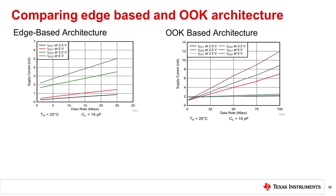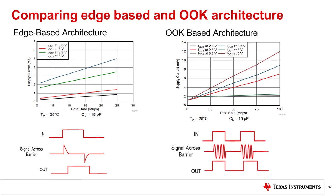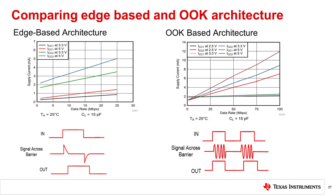Which architecture is best for my design? One of the primary benefits of the edge-based modulation scheme is a lower power profile than the OOK architecture. This is because the edge-based isolator only passes a signal across the isolation barrier during data transitions or edges, resulting in significantly lower power usage than the OOK architecture, which is in a continuous state of sampling and transmitting the modulated input across the barrier. Because of this continuous transmission, the OOK architecture requires significantly more power than the PWM-based edge-based architecture.